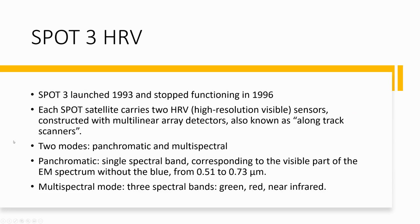SPOT 3 satellite was launched in 1993 and stopped functioning in 1996. Each SPOT satellite carries two HRV — High Resolution Visible — sensors, constructed with multi-linear array detectors, so it is also known as an along-track scanner.